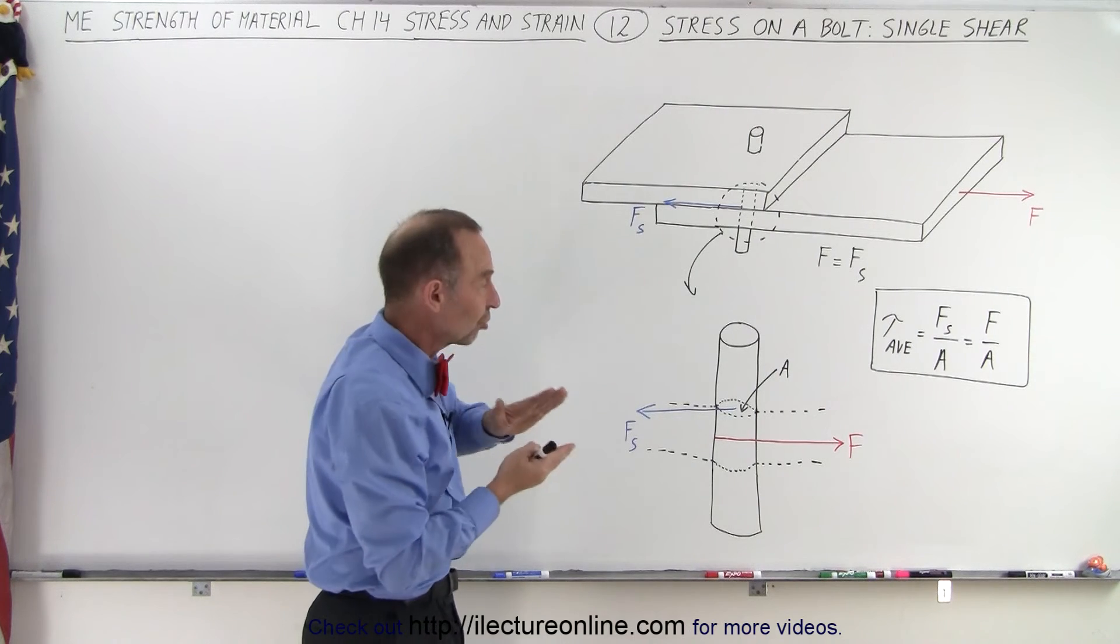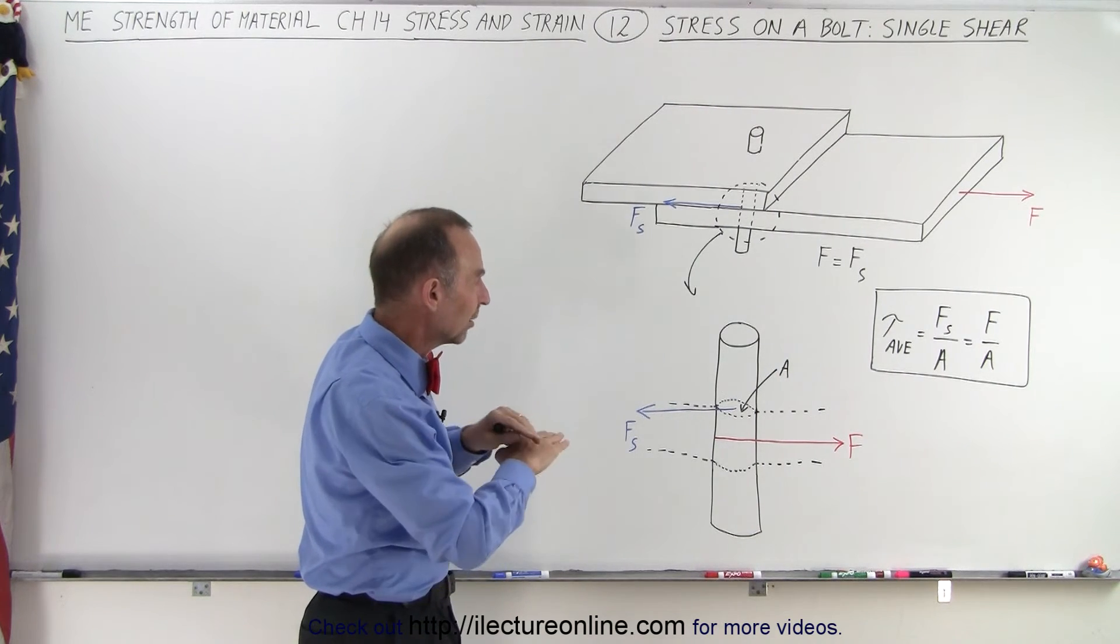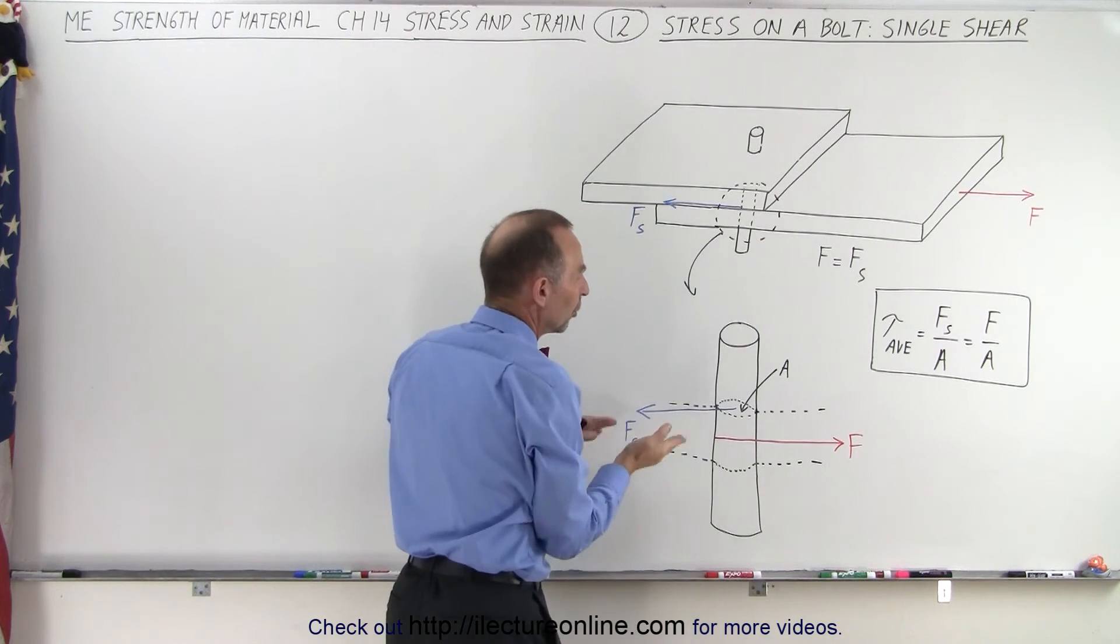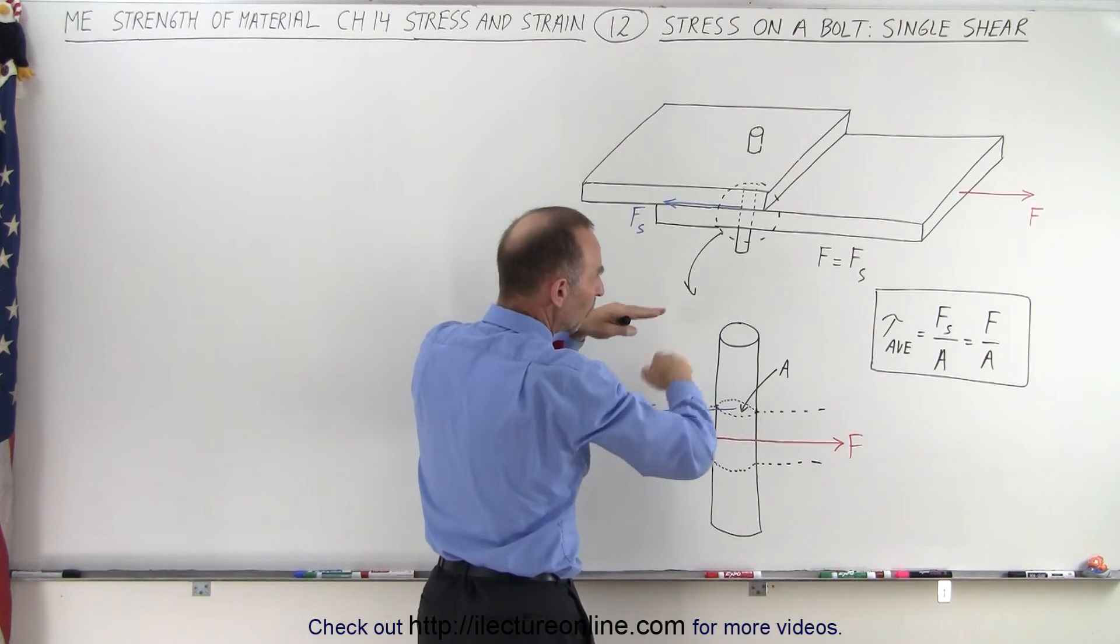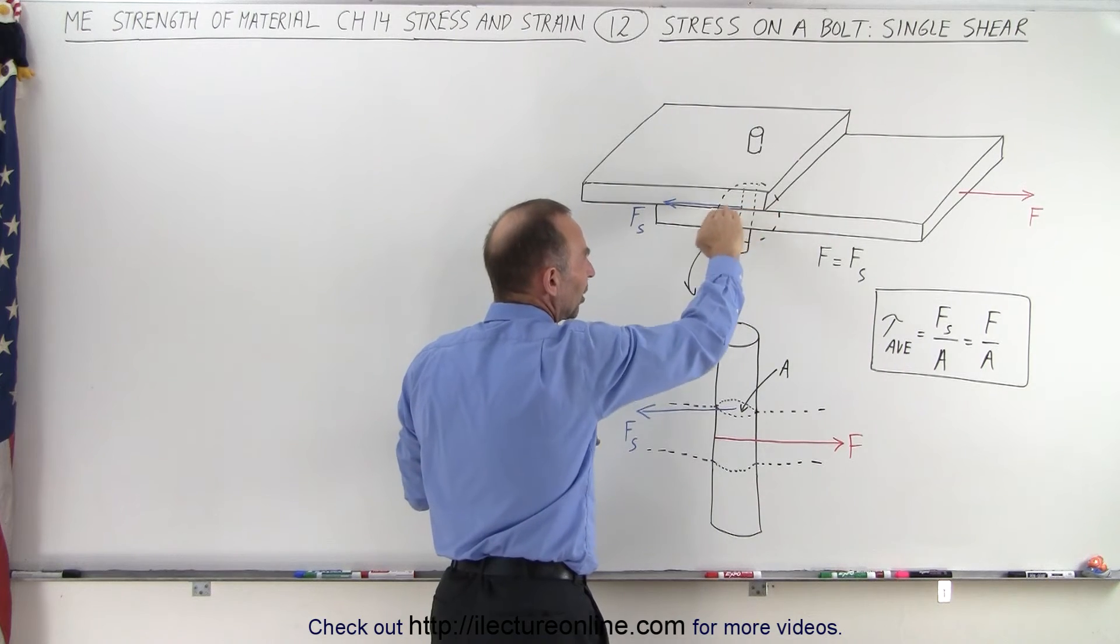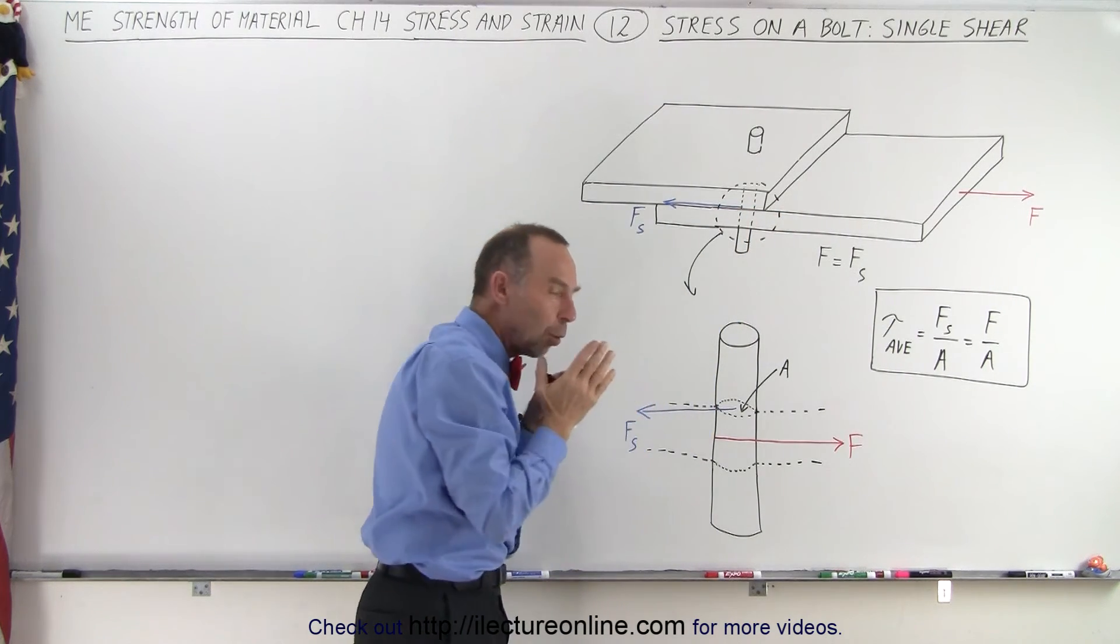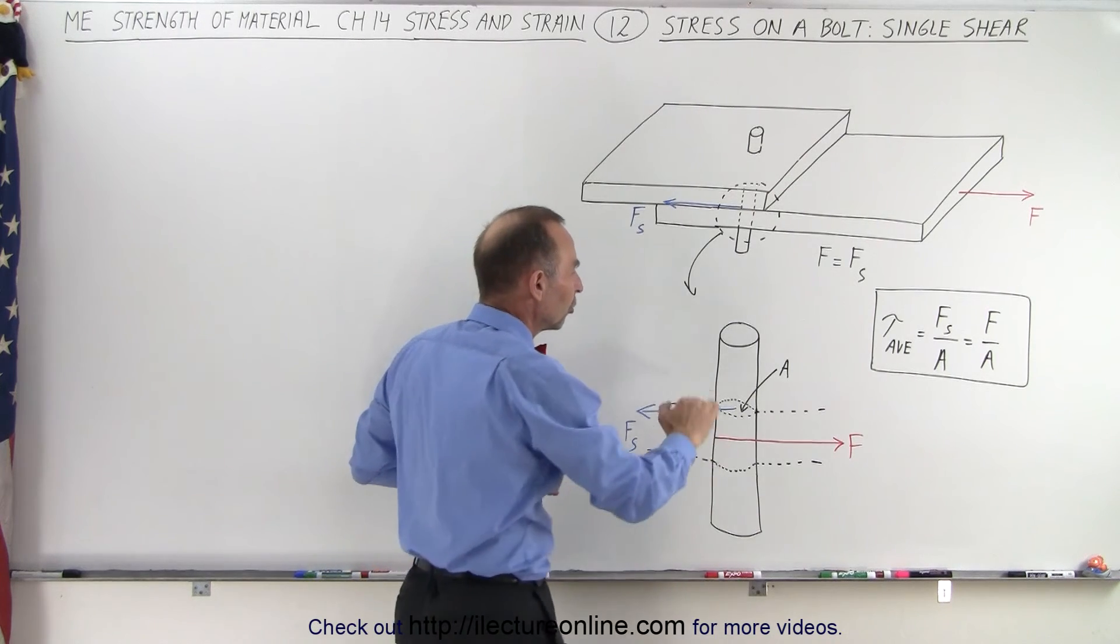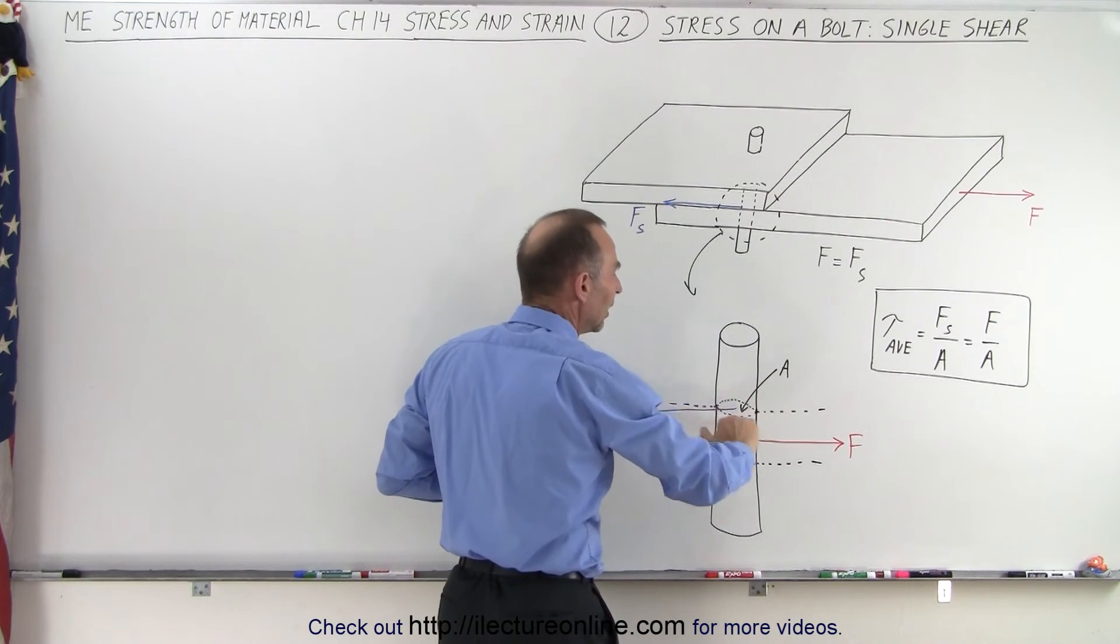But in a single shear stress situation, this is called a single shear. We just have two boards, a bolt going in between, and the cross-sectional area of the bolt is the only thing that resists the breakage of the board. In other words, the shear stress is entirely situated on one single cross-section of the board.